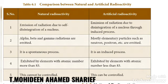In radioactivity there are two types. Natural radioactivity is the spontaneous emission of radiation due to disintegration of the nucleus; alpha, beta, and gamma radiations are emitted. It is a spontaneous process, exhibited by elements with atomic number greater than 83, and natural radioactivity cannot be controlled.